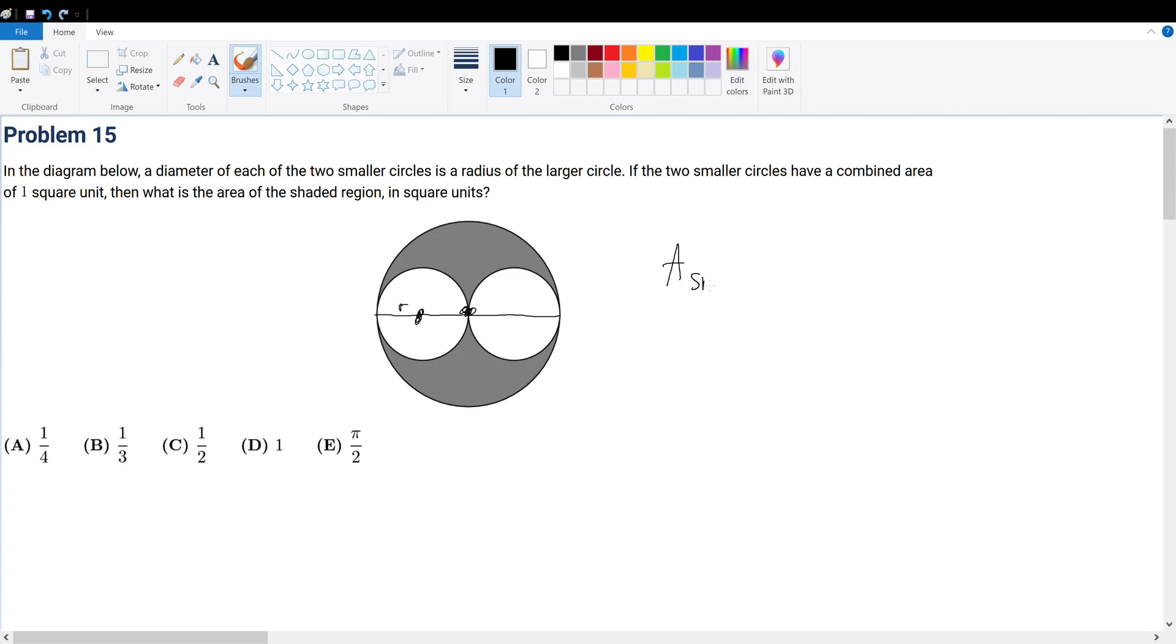Then the area of the small circle will be equal to π times r squared. Now we have two of them, so two of them will give 2πr².